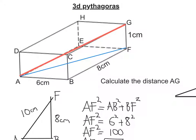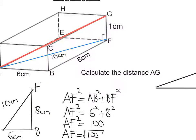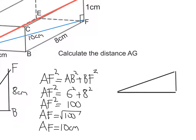So, let's look back at our original diagram. I now know this diagonal across the base is 10 centimetres. What I can do now — I've got a right angle here — I can work out AG by forming this triangle. Let's draw that out separately. This is A, that's F, and that's G. We put on the distances we know: 10 centimetres for AF, which we just worked out, and 1 centimetre for GF.